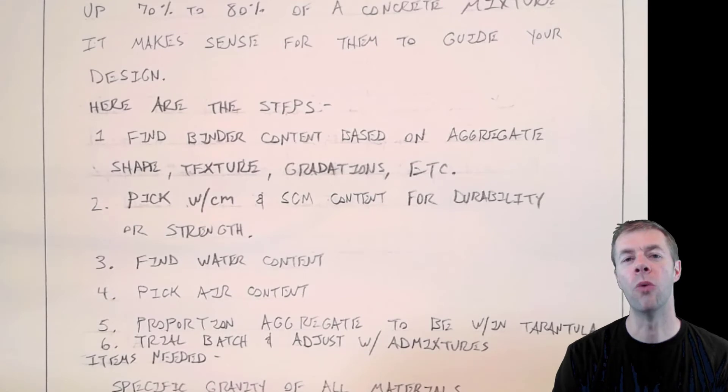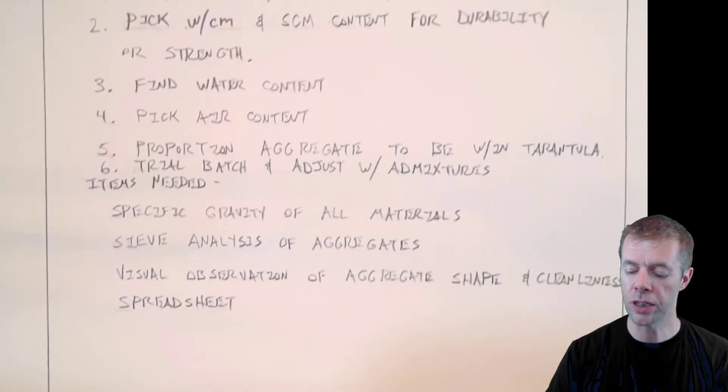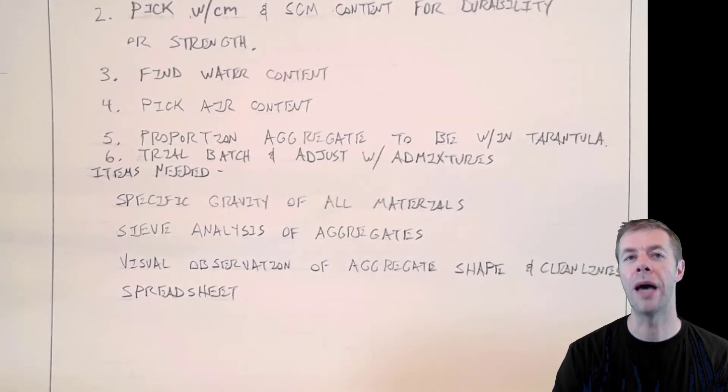Number two, pick a water-cement ratio and a supplementary cementitious material content for durability or strength. Number three, find the water content, it's pretty easy. Number four, pick an air content, also pretty easy. Number five, proportion your aggregates to be within the Tarantula Curve. Sounds kind of hard, but if you got the right materials, it's not that bad.